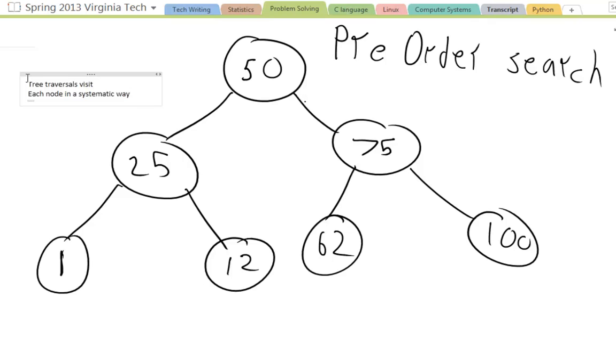Here is the basic algorithm for a pre-order search. I'm going to write down node, left, and then right. So this is the pattern we're going to follow when we visit these nodes. When we start at the binary tree, we're always going to start at the root.